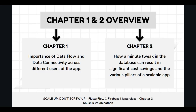For those of you tuning in new, we have already covered Chapter 1 and Chapter 2 — the links will be available in the description below. In Chapter 1, we spoke about the importance of data flowing across your entire application: how it originates, where it gets created, how it gets consumed, how each user interacts with this data, how connectivity across them happens — that is your business logic — and the importance of maintaining data sanity across these users.